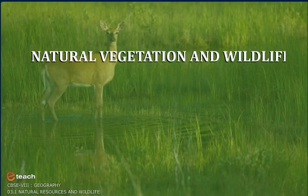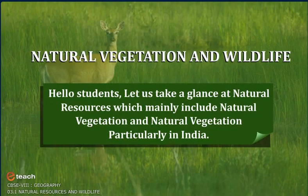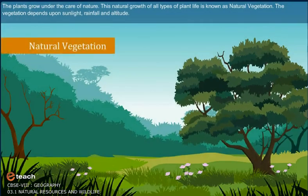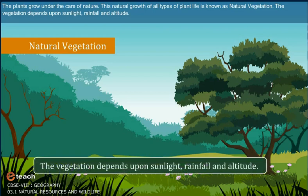Hello students, let us take a glance at natural resources, which mainly include natural vegetation, particularly in India. The plants grow under the care of nature. This natural growth of all types of plant life is known as natural vegetation. The vegetation depends upon sunlight, rainfall and altitude.